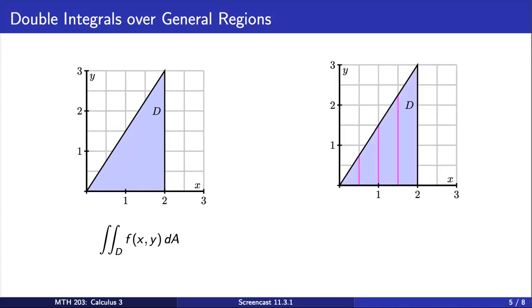If we try and set this up as an iterated integral slicing in the y direction, we see that our slices in pink do not have the same length. As our x values vary from left to right, we see that the height of the pink slices changes. So we can describe the height of the slices as a function of x.